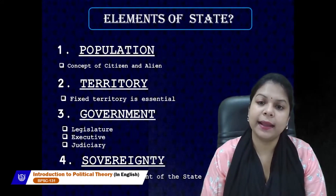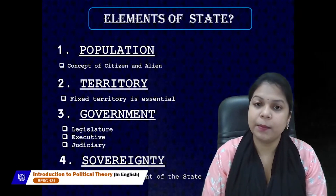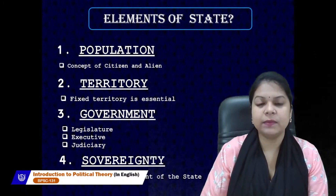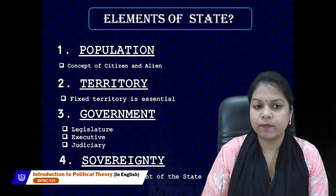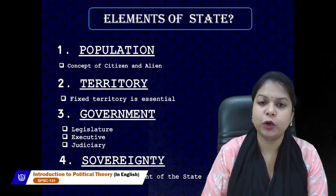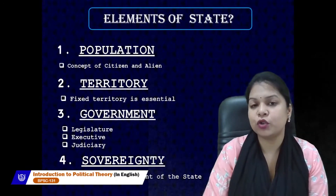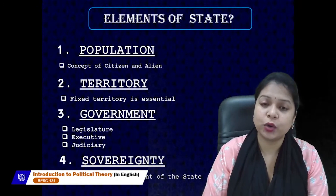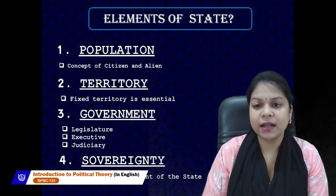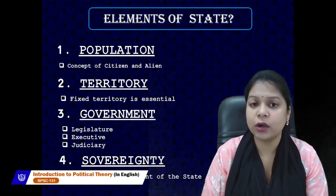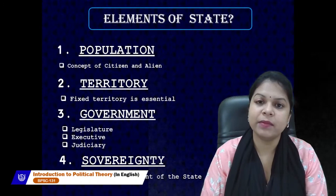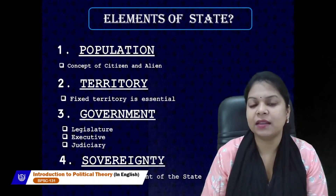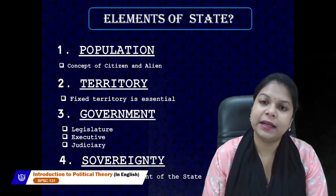The next important element of state is territory — not just territory but fixed territory. In earlier times kingdoms could increase their territory through wars, but a state requires fixed borders. There is a difference between state and kingdom because in a kingdom there is scope of increasing or decreasing territory, whereas in a state the demarcated boundary must be fixed.